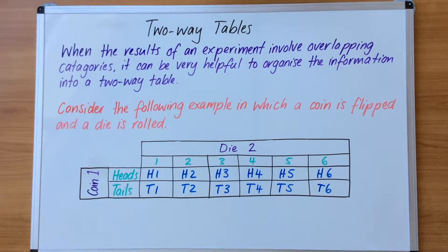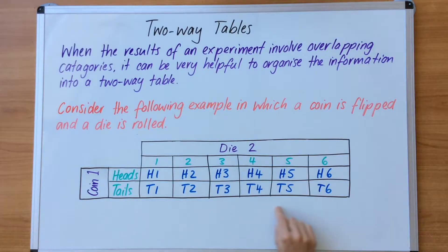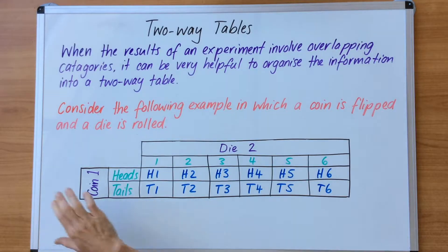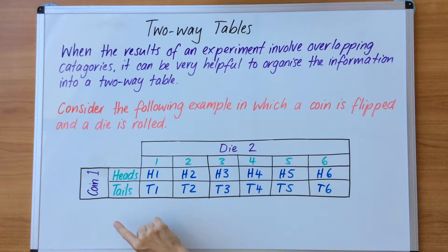In this video we are going to focus on two-way tables. When the results of an experiment involve overlapping categories it can be very helpful to organize the information into a two-way table. We have a two-way table here — two ways meaning one way this way, the second way this way, two ways and two items up for consideration.